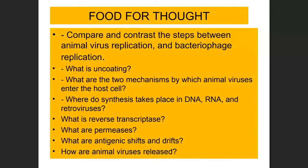You should be able to compare and contrast animal virus infection with bacteriophage infection — for example, animal viruses require uncoating because the entire virus enters the cell. For animal viruses, synthesis can occur in the cytoplasm or nucleus depending on virus type. You should know what reverse transcriptase is, what replicases (RNA-dependent RNA polymerases) are, and how they differ.